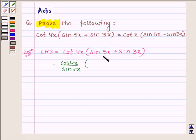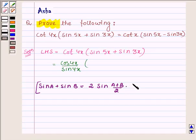And sin 5x plus sin 3x is in the form of sin A plus sin B, whose formula is equal to 2 sin A plus B upon 2 into cos A minus B upon 2.